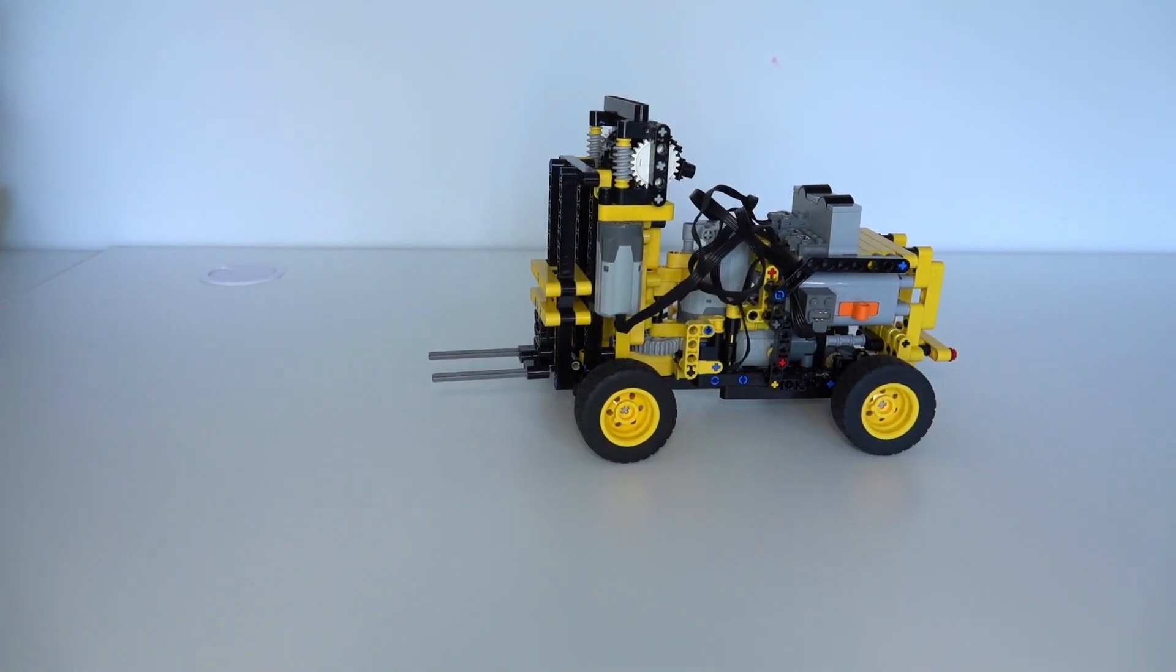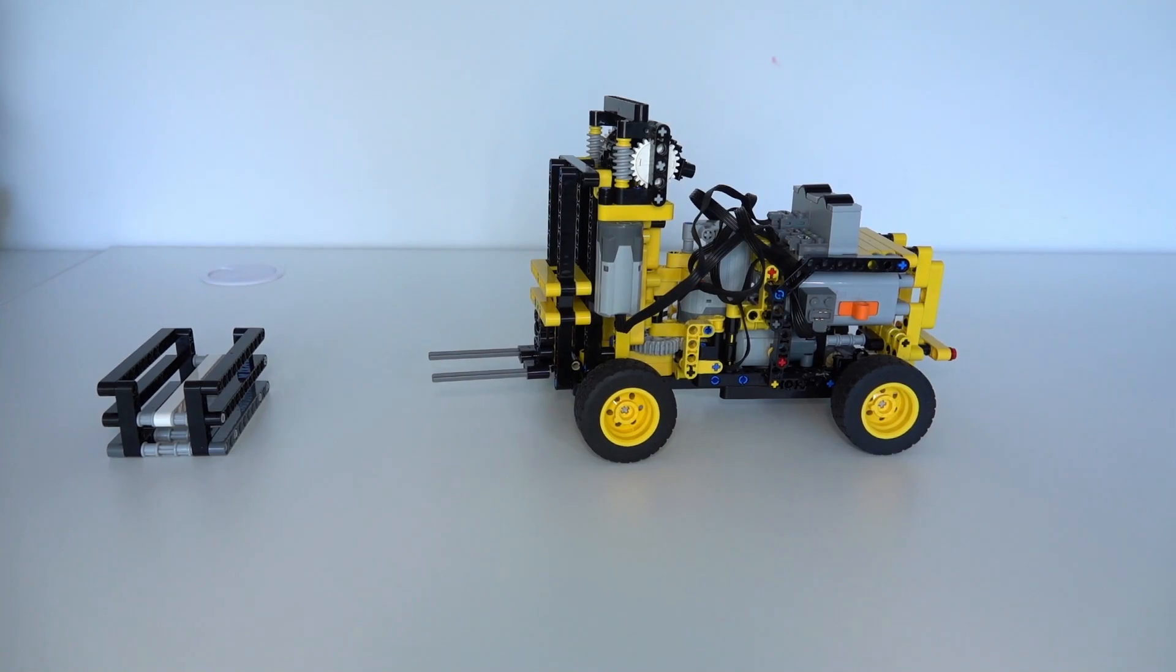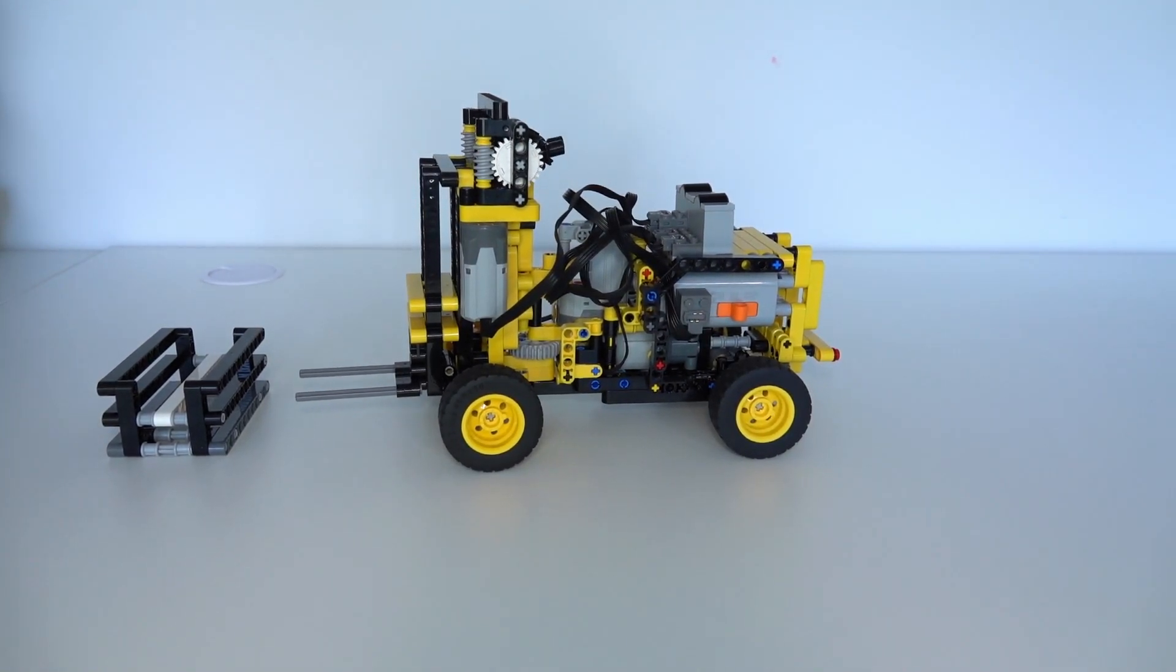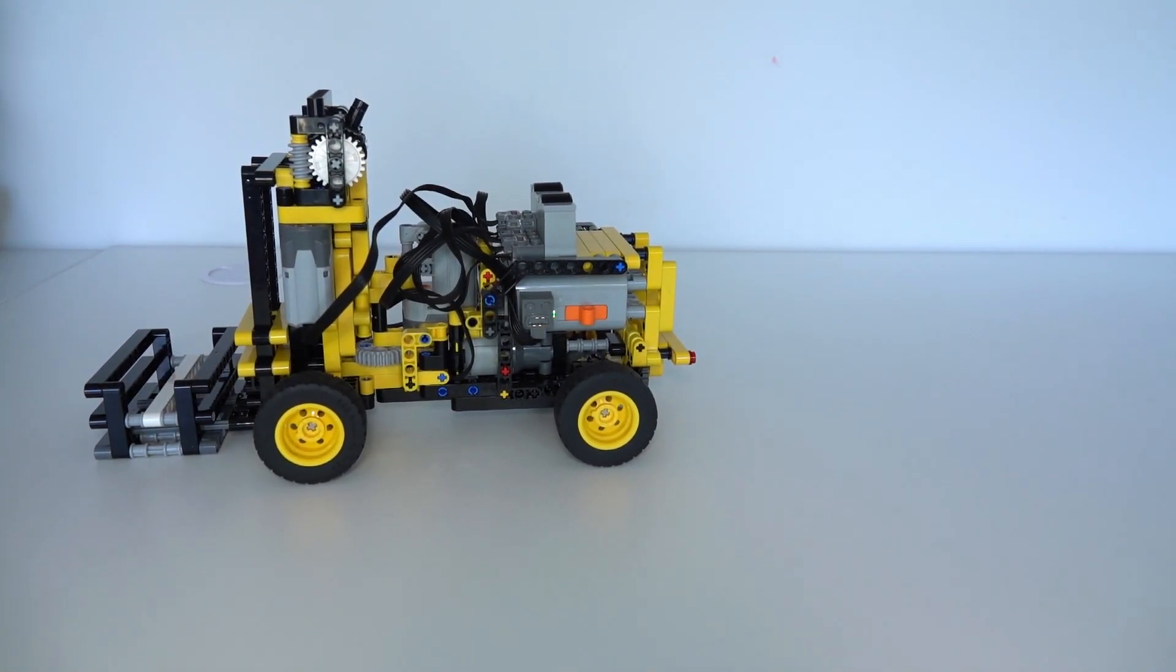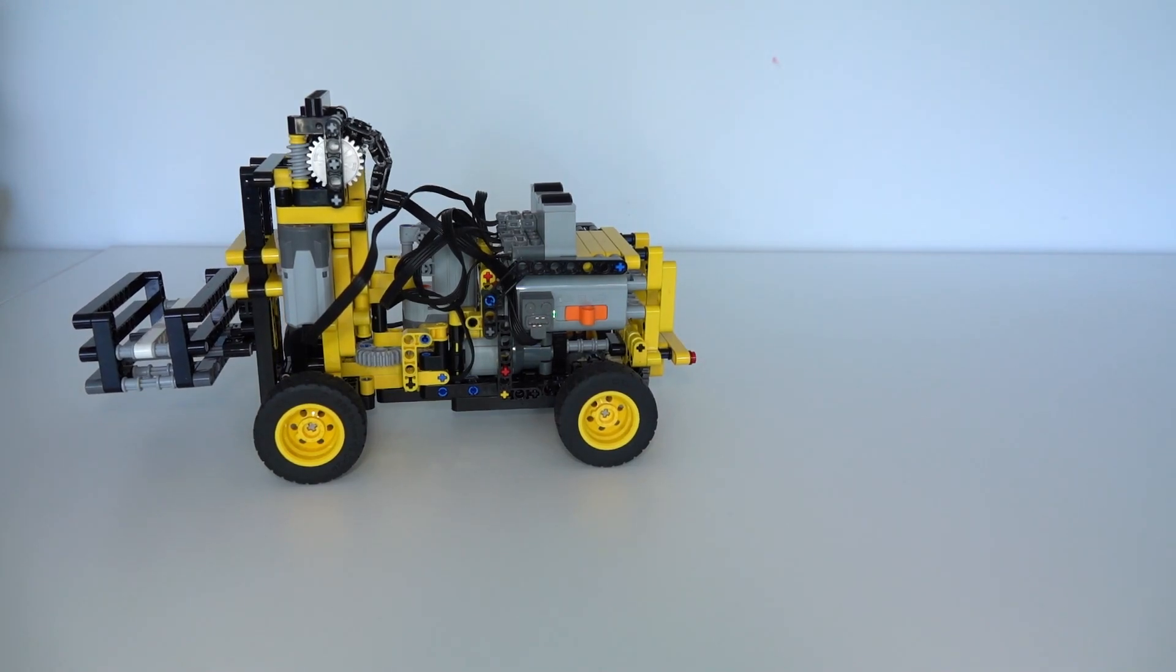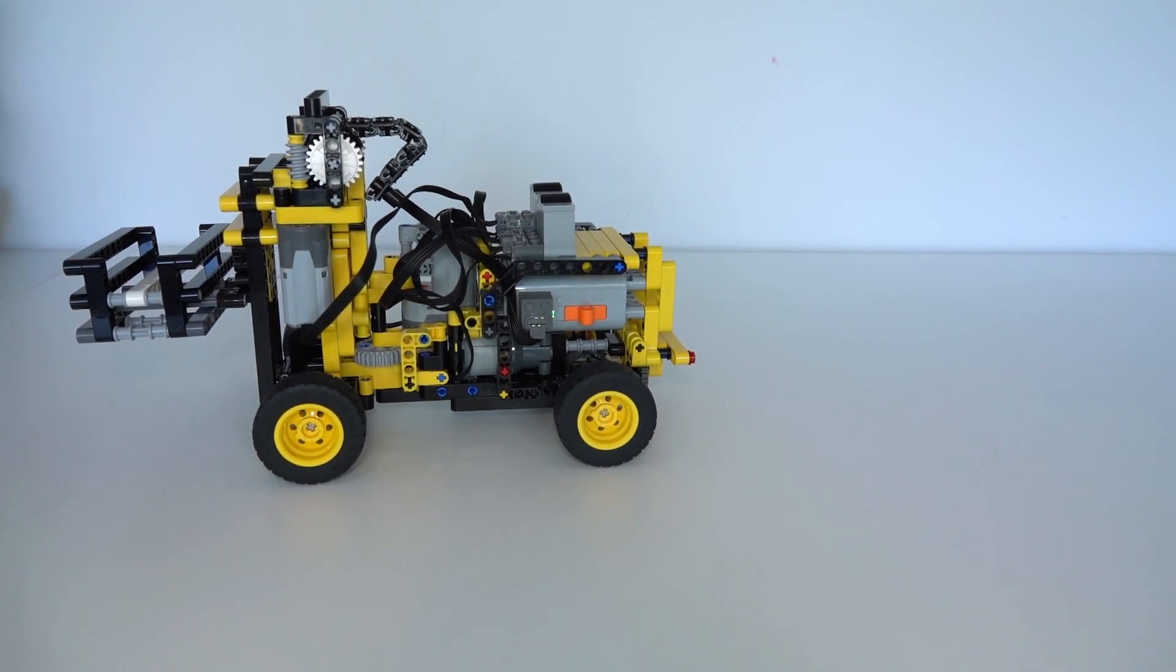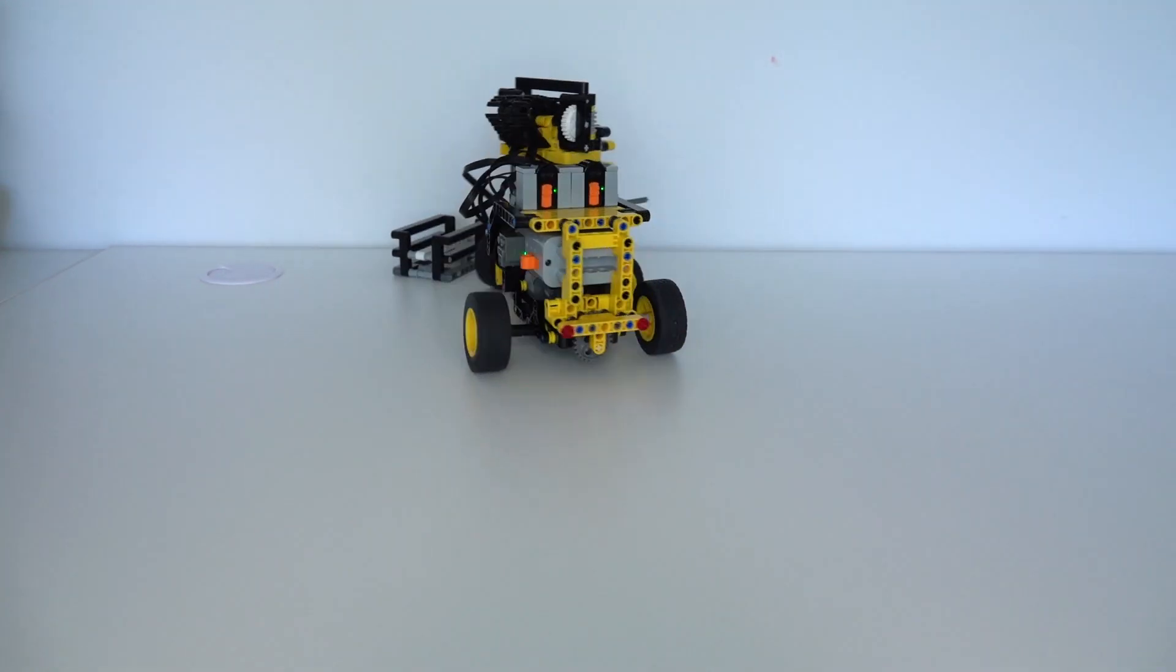Let's move some boxes. So here I've got a box to pick up. I will edge over to it, take the fork down, and drive onto it. Raise the fork, look at that, picked it up. You can now drive backwards. Oh, almost fell off. Let's drive forward then.